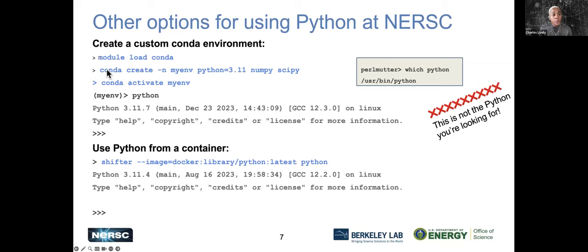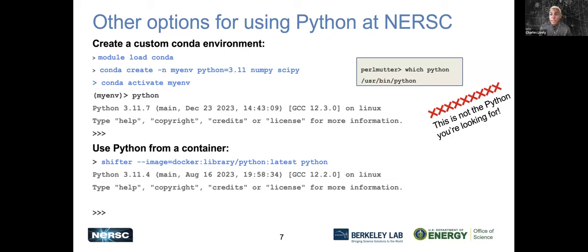You do 'module load Conda' and then 'conda create', naming it whatever you want — in this case, 'my_environment'. We specify the Python version we want and any additional libraries, then activate the environment and we're good to go. At NERSC, we also have containerized environments available such as Shifter. Those are probably the safest ways we recommend using Python for contained and safe environments for your simulations.